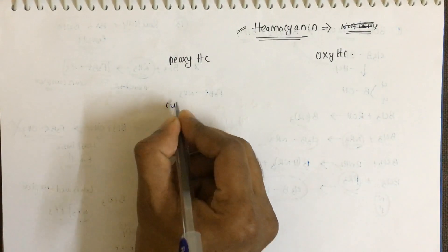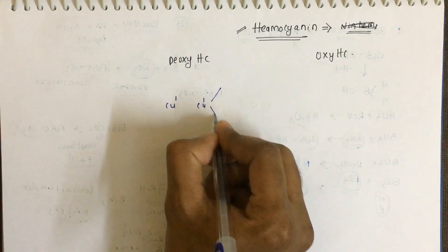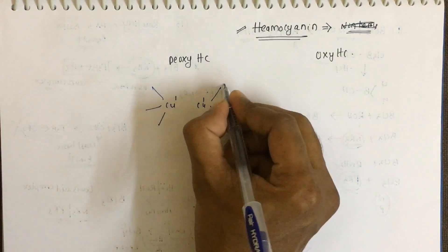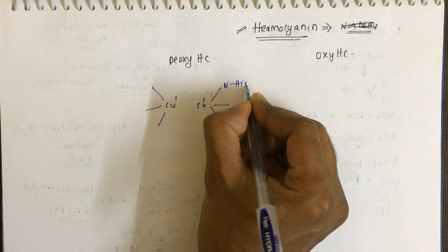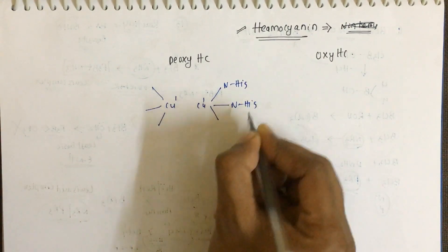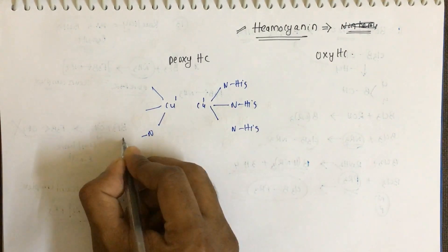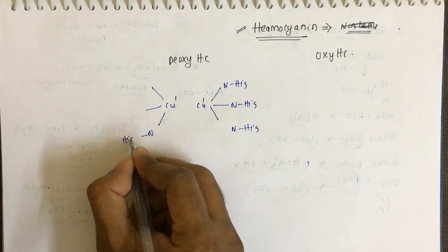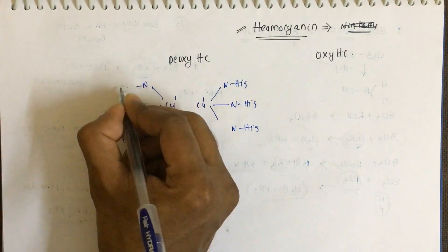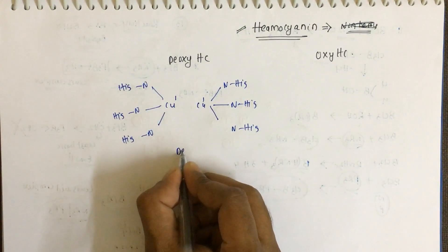In deoxyhemocyanin, both copper units are present in the plus one oxidation state, and three histidine atoms are attached via the nitrogen of histidine to each copper, just like this. This is the deoxy form.